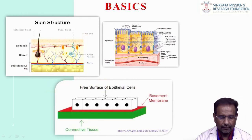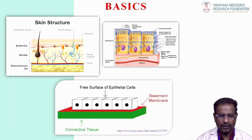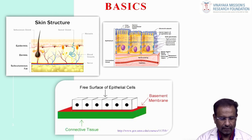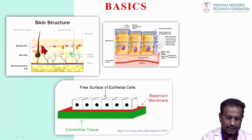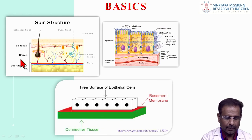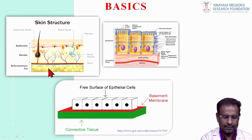Before we go into the topics, we should know some basics. First, the basic structure of the skin and oral mucosa. Skin covers all over the body; oral mucosa covers the oral cavity. In the structure of the skin, there are three layers. The superficial layer is called epidermis, the middle layer is called dermis, and the third layer is called subcutaneous fat.